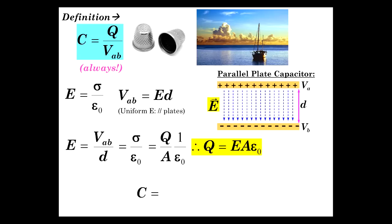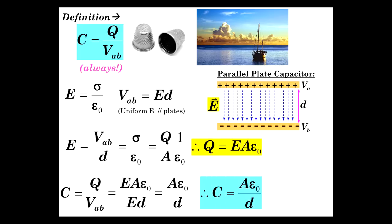So, now, C, Q over V_AB, we just define Q, E A epsilon zero, and there it is, and over E D, which is V_AB. So, now we see it's actually electric field independent. It's A epsilon zero over D, which, wonderfully, is actually a geometric expression for capacitance. So, we don't have to worry about the physical quantities and what their values are, just like with a bucket of water.